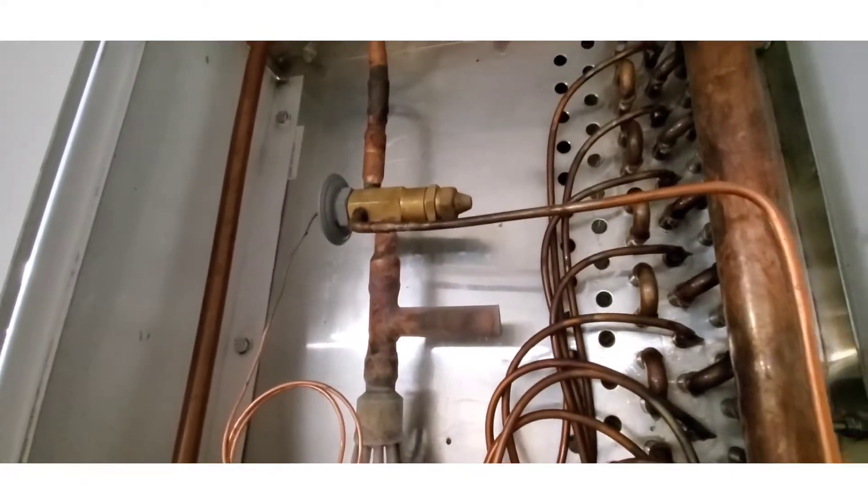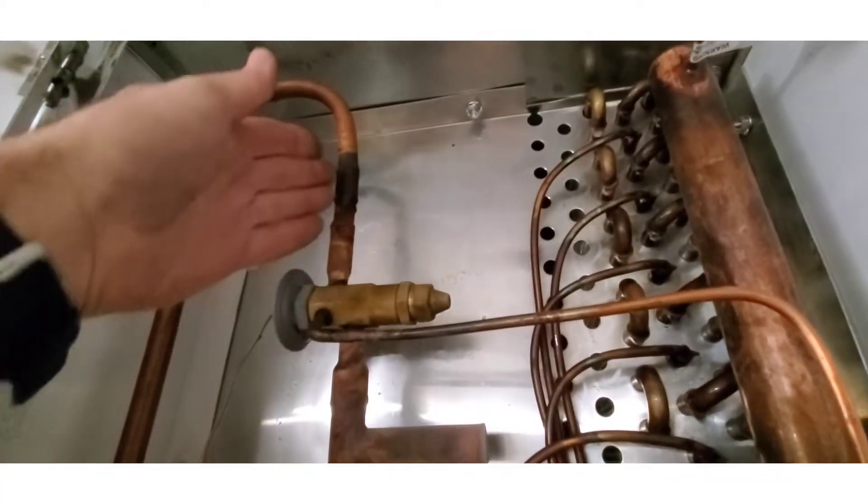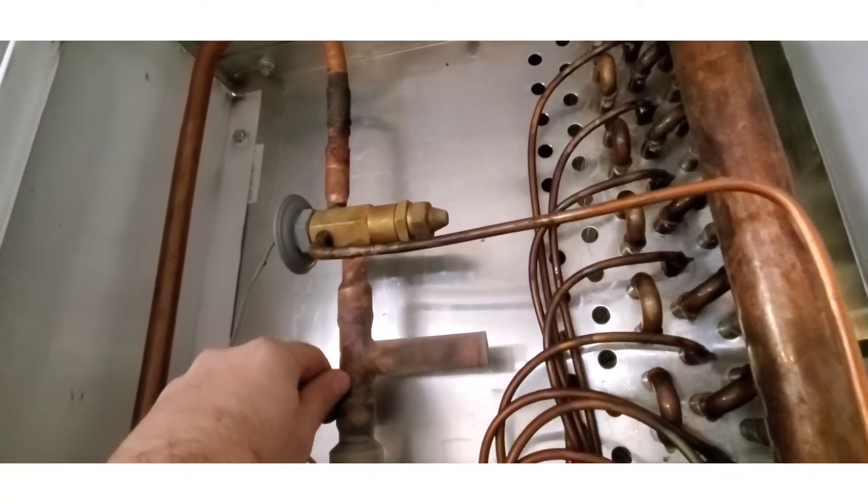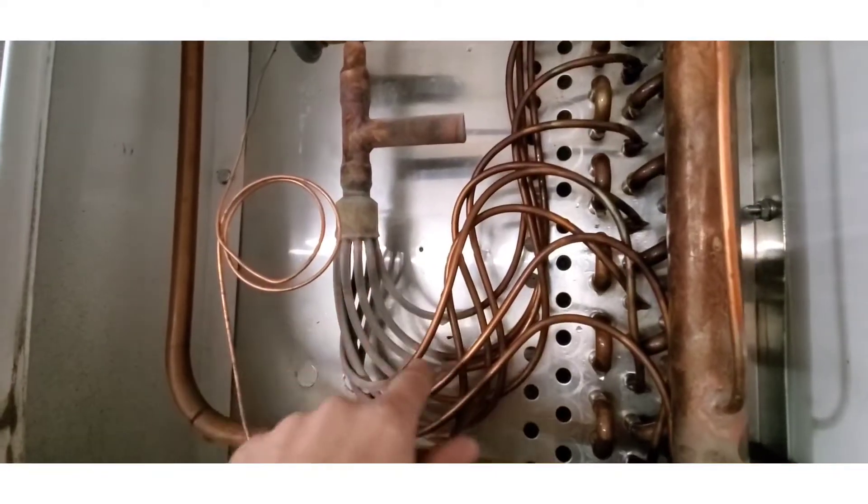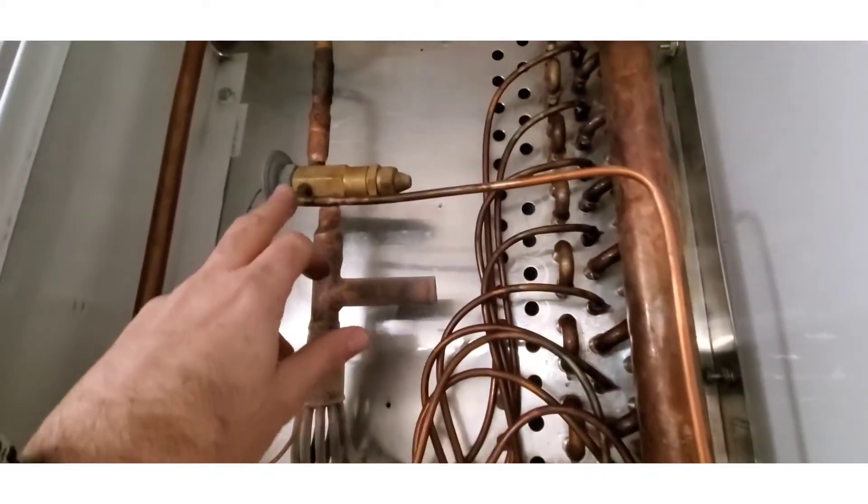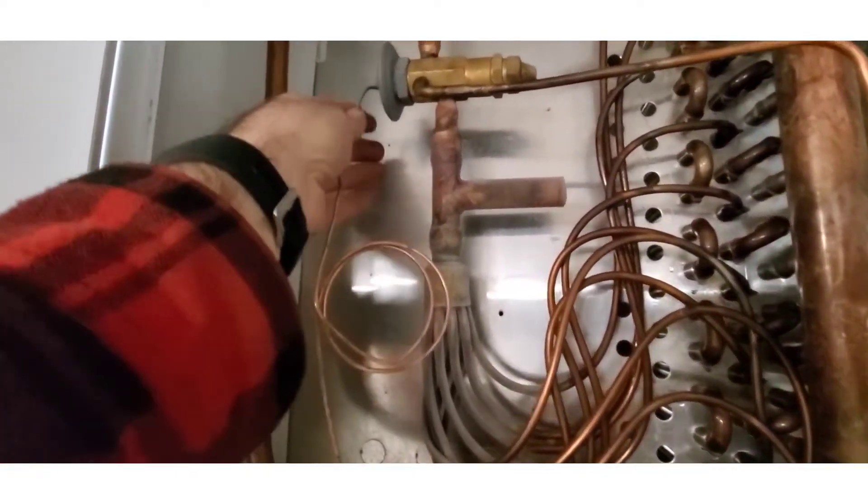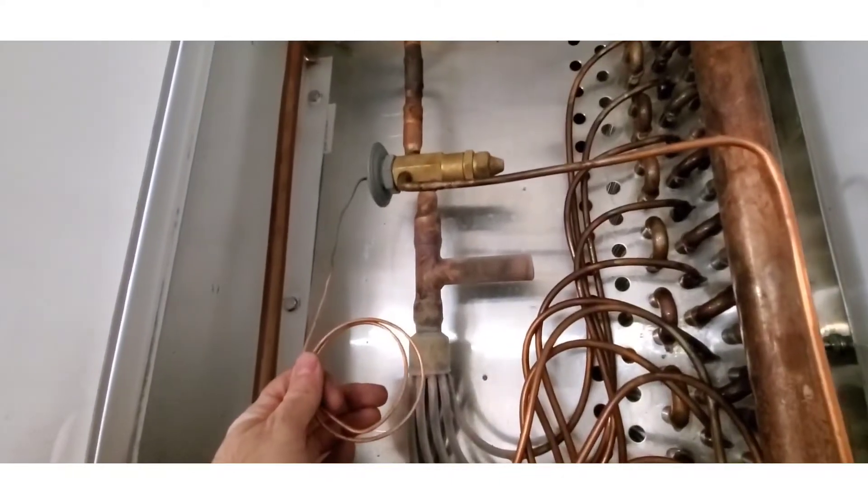So how do we maintain superheat in the evaporator? Well, we do it with the TX valve. Liquid enters. We flash that liquid off into a liquid vapor mixture right here. It enters through the distribution lines, goes into the evaporator. This is your equalization line. And this is the capillary line that goes to the sensing valve mounted to the suction line.